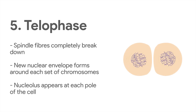In telophase, the spindle fibers completely break down. A new nuclear envelope forms around each set of chromosomes. The cell has now finished dividing up its nucleus into two identical nuclei and is ready to move on to cytokinesis.